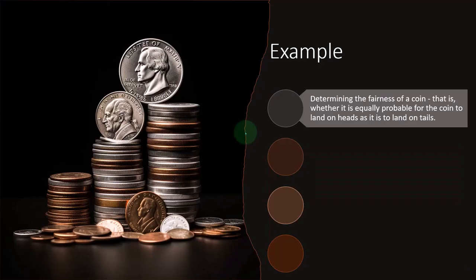We want to be determining the fairness of a coin—that is, whether it is equally probable for the coin to land on heads as it is to land on tails. In other words, if we flip a coin, a quarter for example, multiple times, we would expect an equal number of heads versus tails, or at least the probability of landing heads and tails should be equal.